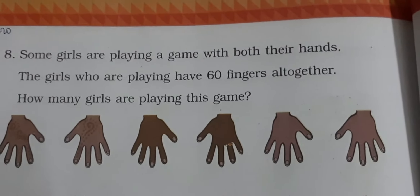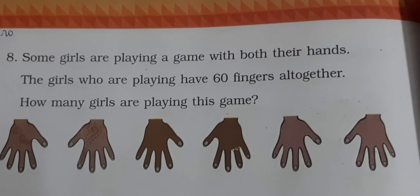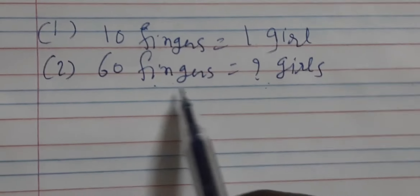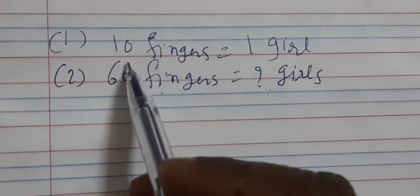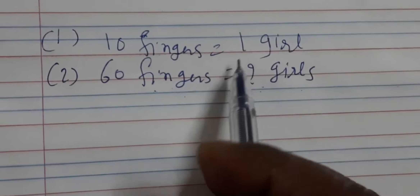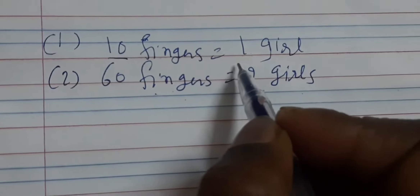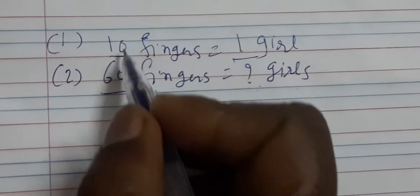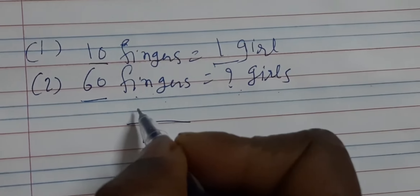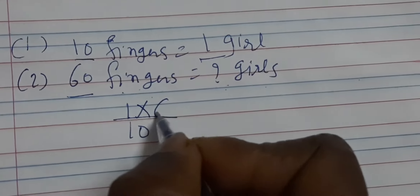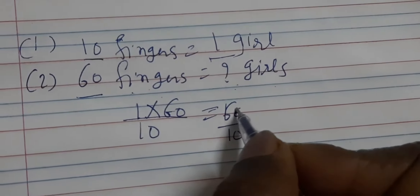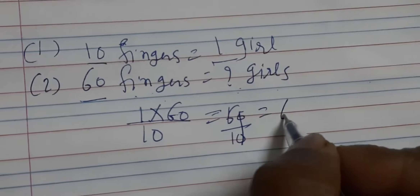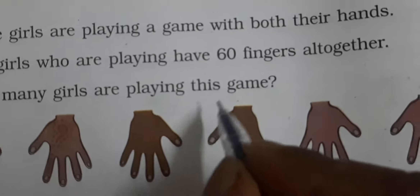To humein pata hai ki ek girl ke total 10 fingers hoti hain. To pehla step: 10 fingers equal to 1 girl. Yeh ho gaya hamara step. Ab yeh pehla number, yeh doosra number, aur yeh teesra number. Pehla number division mein neeche jayega, doosra number upar, multiplication mein teesra number. To 60 divide by 10 — dono 10 kat ho jaenge — to 6 larkiyan yeh game khel rahi hongi. 6 girls.